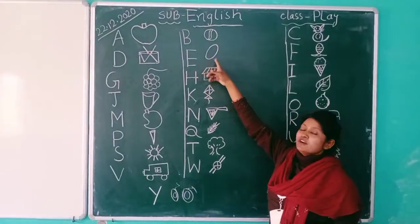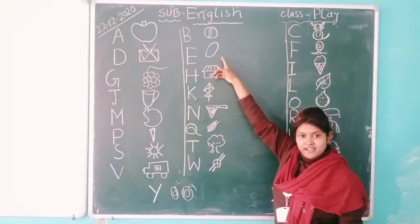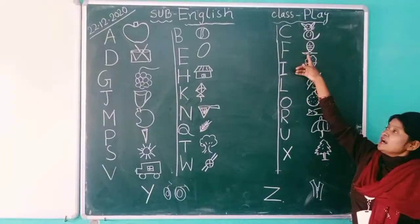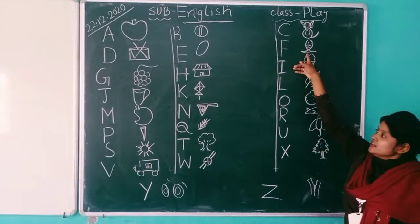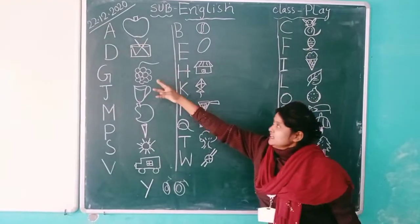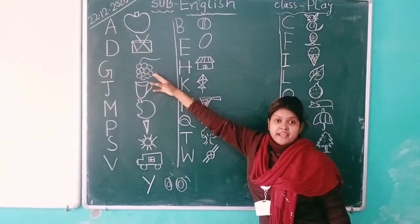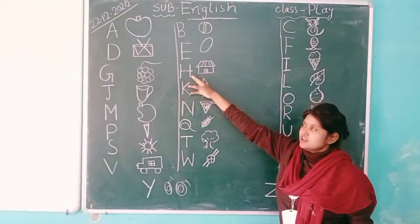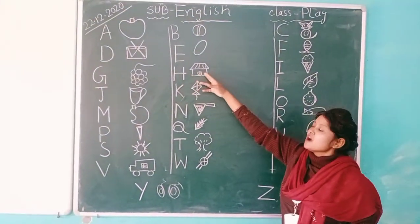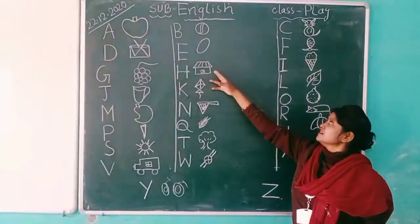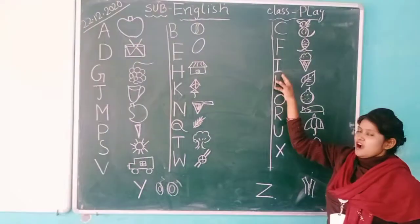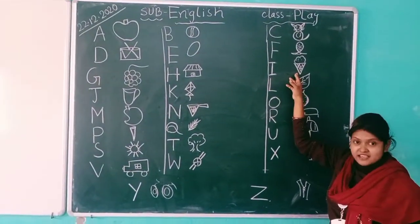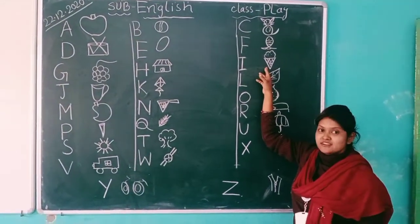E. E for egg. F. F for fish. G. G for grapes. H. H for heart. I. I for ice cream. This is very lovely food, no?